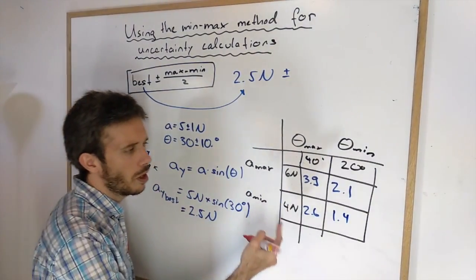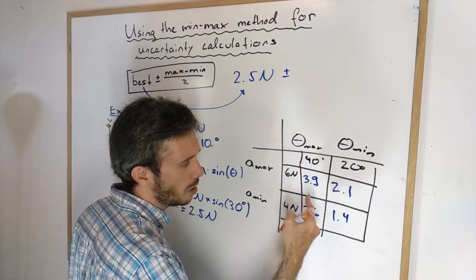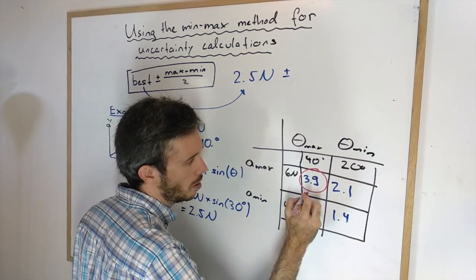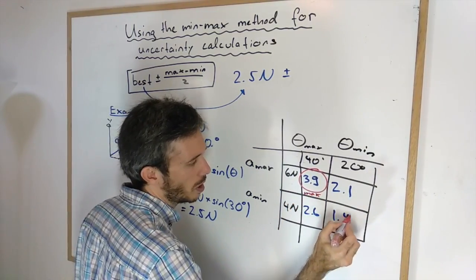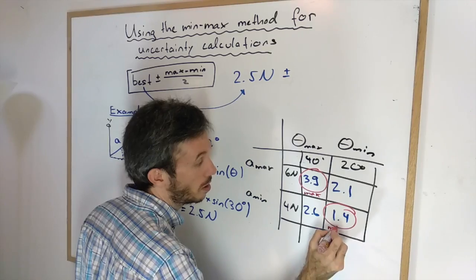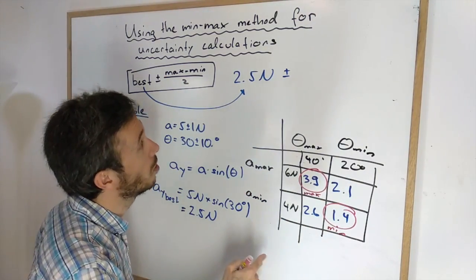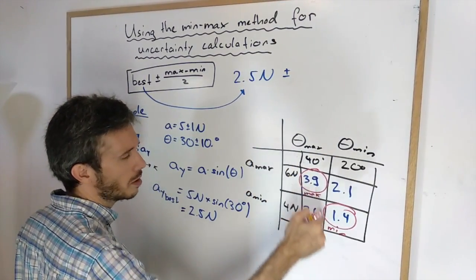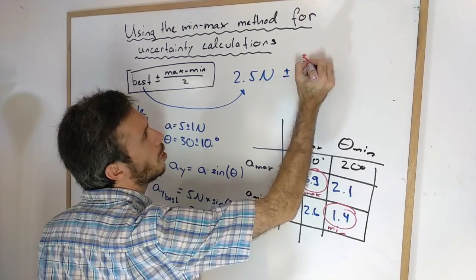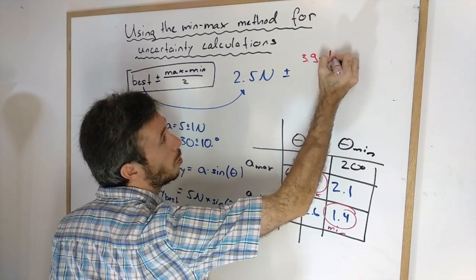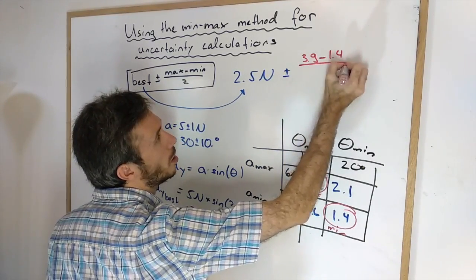So now once I've done this I'll have to look in my values which one is my highest which is this in this case and which one is my smallest which is this in this case and plug it in here. So I have plus minus 3.9 minus 1.4 divided by 2.